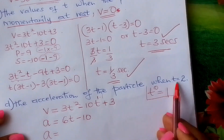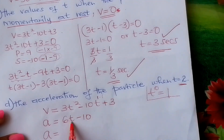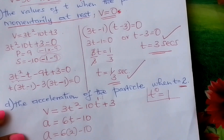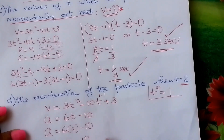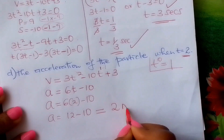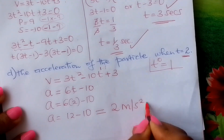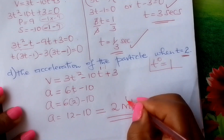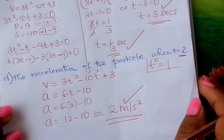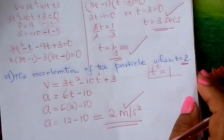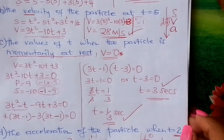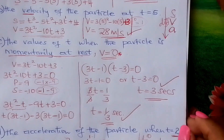What is a when t equals 2? Fix in 2: a equals 6 times 2 minus 10, which is 12 minus 10, giving 2 meters per second squared. This is the acceleration of the particle. God bless you, learner. Go through this problem and internalize it. These are questions that are normally tested, carrying 10 marks. Don't miss the 10 marks — practice.